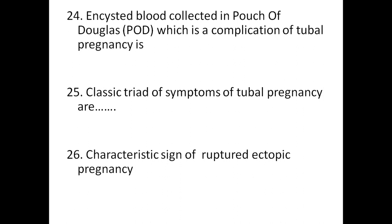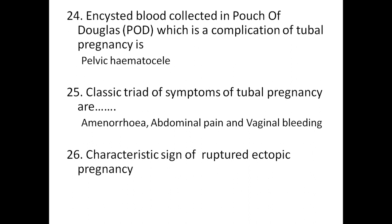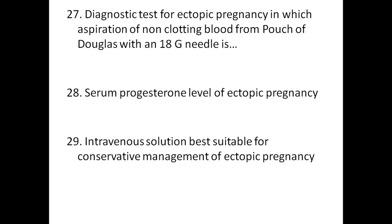Encysted blood collected in the pouch of Douglas, which is a complication of tubal pregnancy, is called pelvic hematocele. The classic triad of symptoms of tubal pregnancy are amenorrhea, abdominal pain, and vaginal bleeding. The characteristic sign of ruptured ectopic pregnancy is Cullen's sign. The diagnostic test for ectopic pregnancy in which aspiration of non-clotting blood from the pouch of Douglas with an 18-gauge needle is performed is called culdocentesis. Serum hCG level in ectopic pregnancy is less than 5 mg per ml.